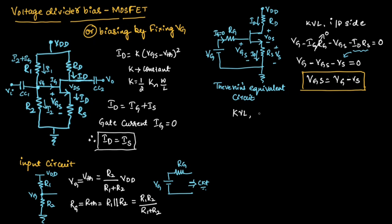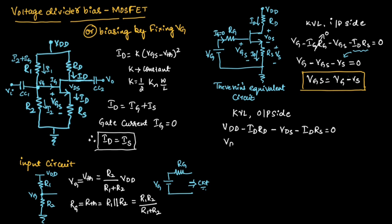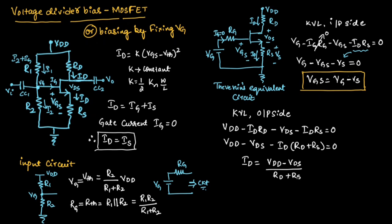Now, if we apply KVL to the output side, we can write: Vdd minus Id·Rd minus Vds minus Id·Rs equals 0. Taking Id as common from the two terms, we can write Vdd minus Vds minus Id into (Rd plus Rs) equals 0. From this, we can find the expression for Id, which is equal to (Vdd minus Vds) divided by (Rd plus Rs).